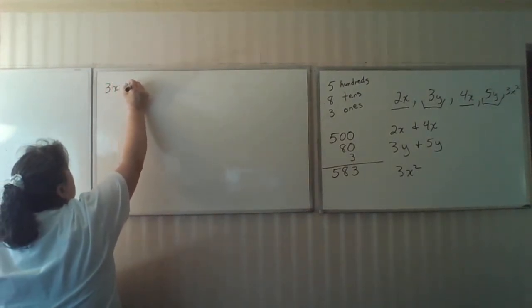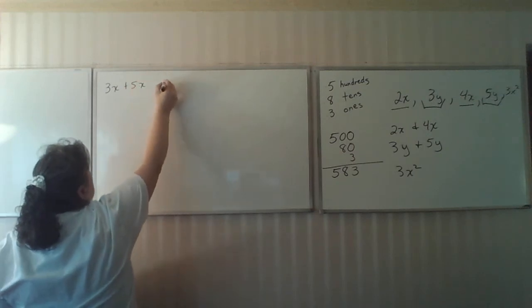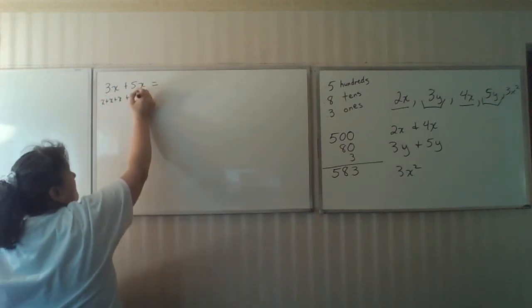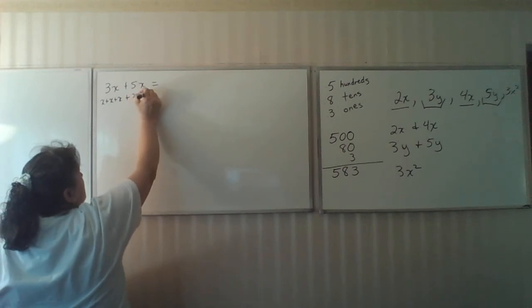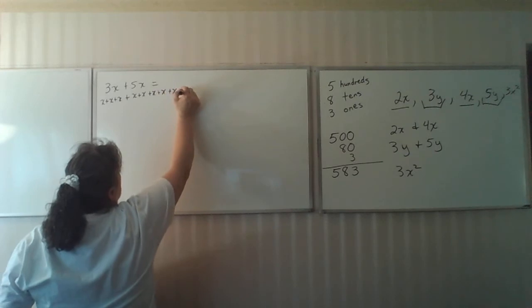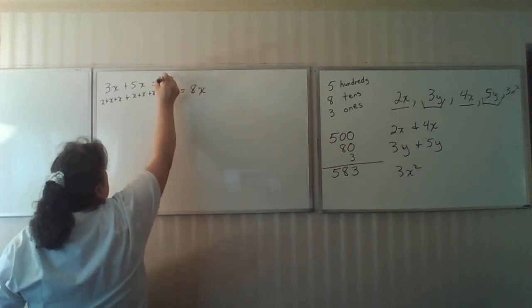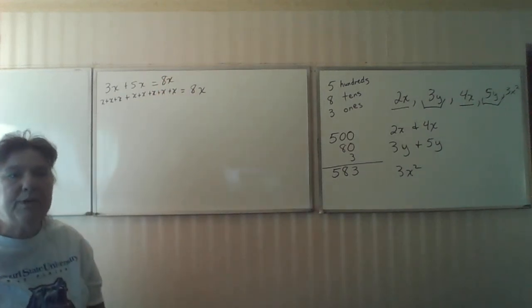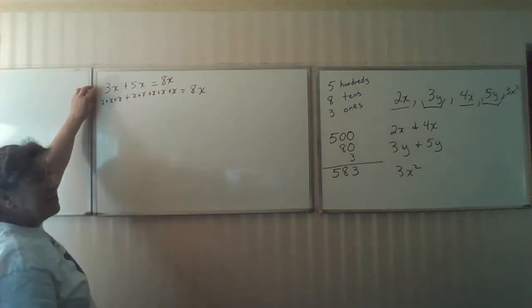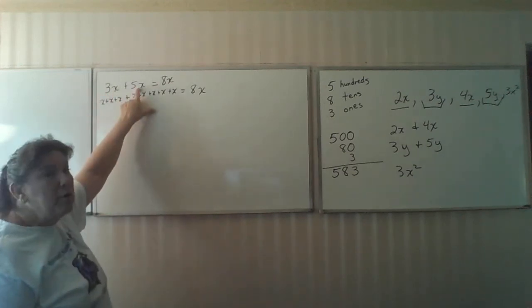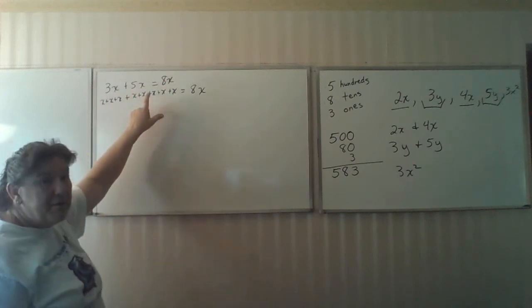3x plus 5x. What does that equal? 3x means I have 3 of these x's added together, plus 5 of these x's added together. Therefore, I end up with 8 of these x's. Thus, 3x plus 5x equals 8x. We're dealing with the coefficient, which is the number that multiplies the variable.